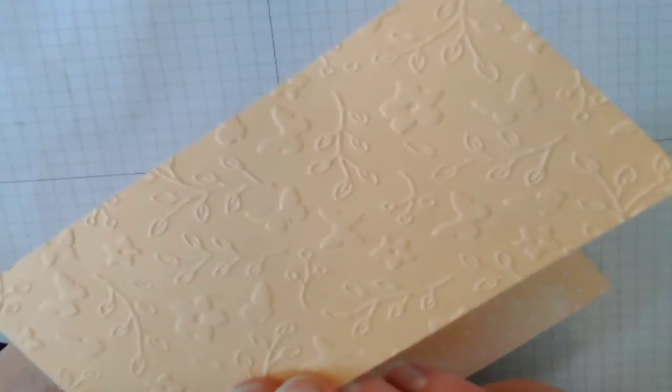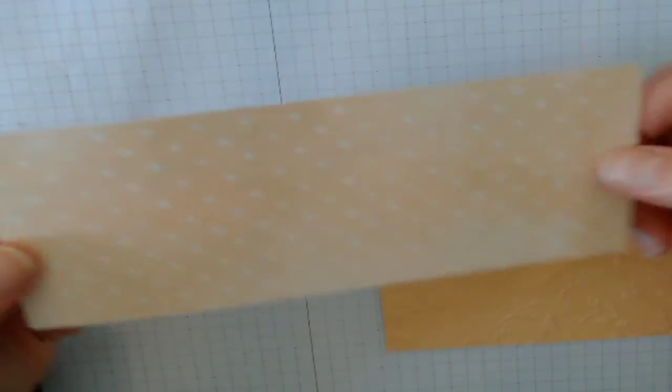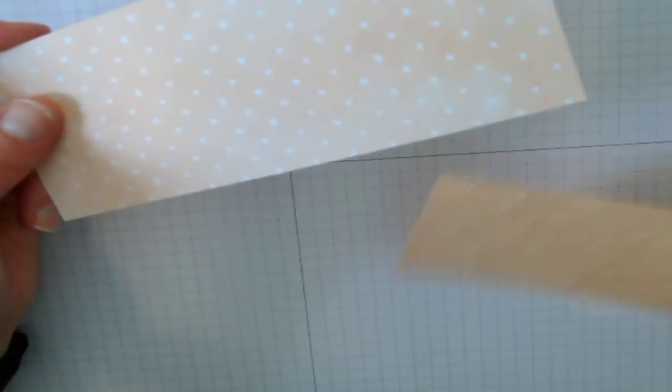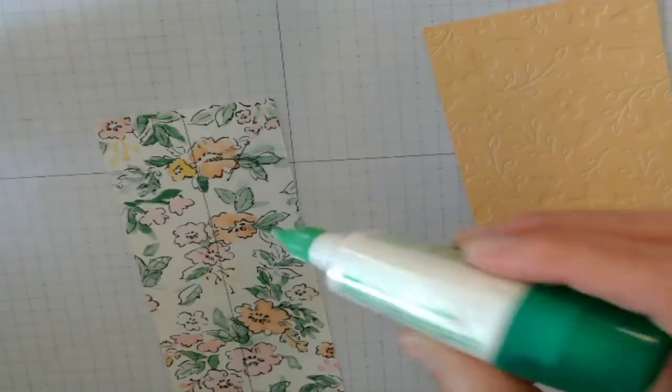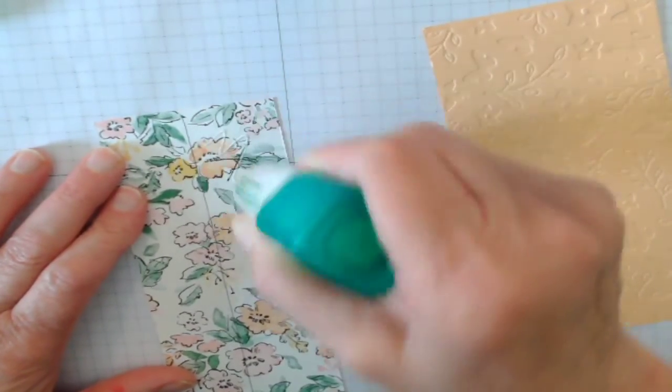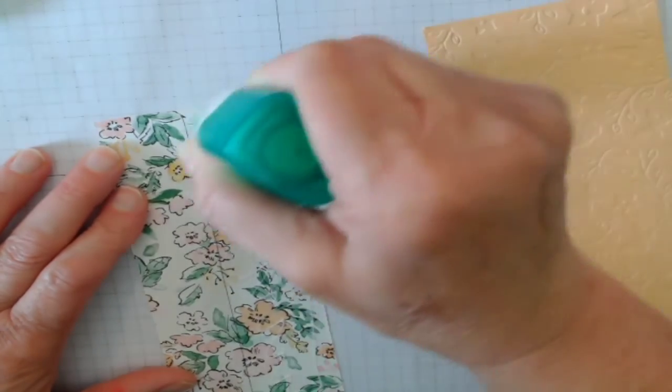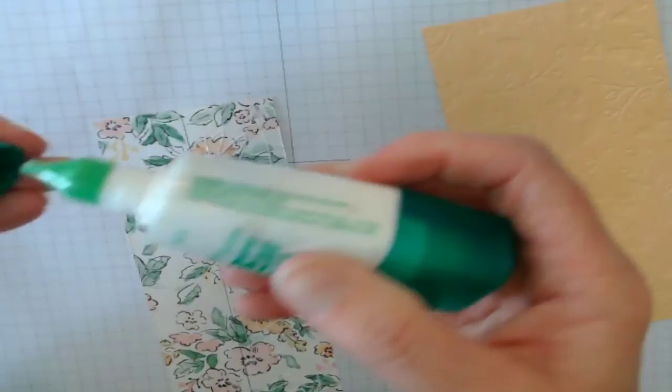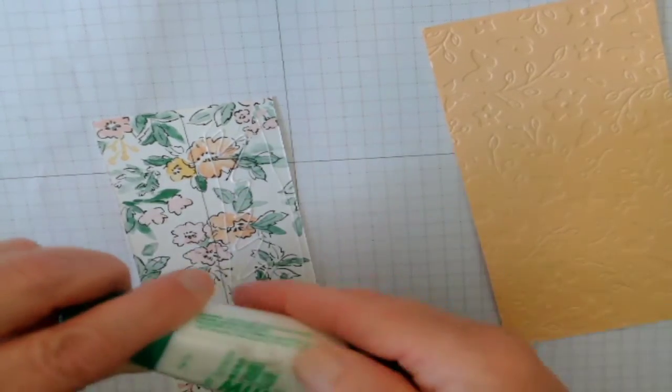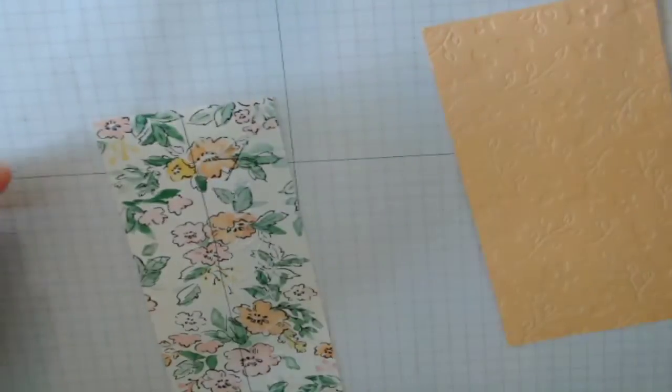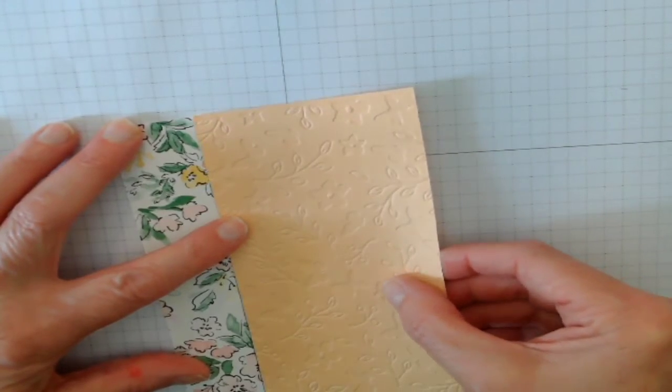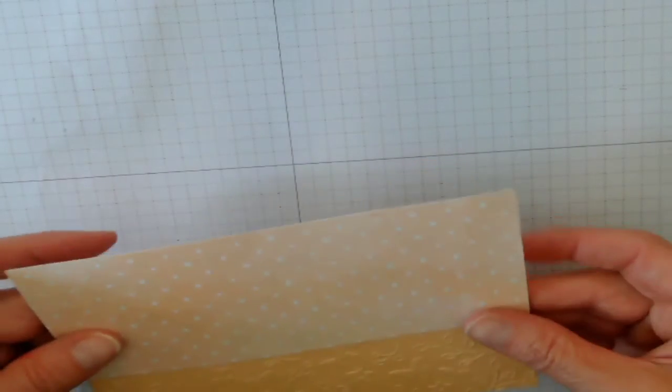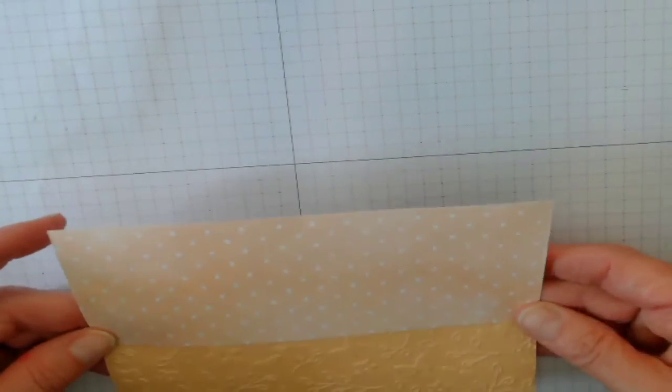So I took our pale papaya paper and put that through the machine. Then I took some of our designer series paper from our hand-penned suite and I'm going to glue these two pieces together. This is our multi-purpose liquid glue. I measured them so that I know they will fit on my card perfectly.